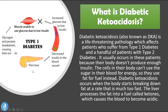In this image on the left side of the screen we have our pancreas, labeled type 1 diabetes, because DKA is most commonly associated with type 1 diabetes. As you can see, there is decreased insulin in the blood vessels. With little or no insulin produced by the pancreas, there is increased glucose in the blood. The muscle is unable to use the glucose due to low insulin levels, leading to glycogen and protein breakdown, which causes diabetic ketoacidosis or ketosis.